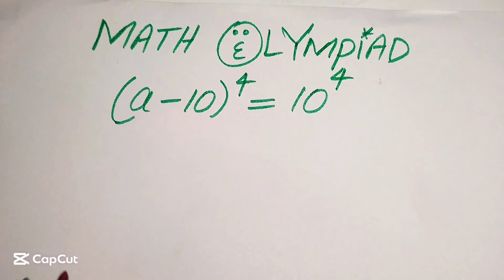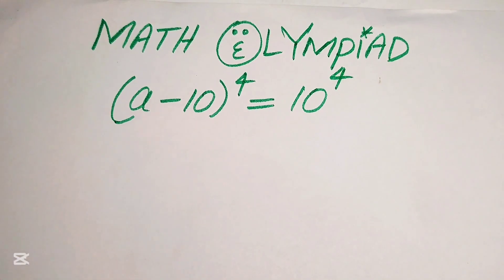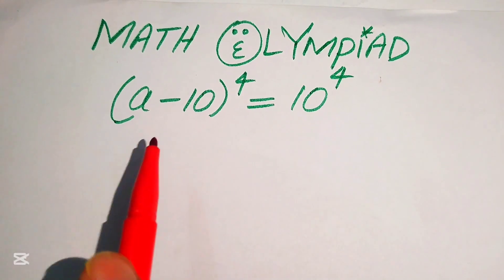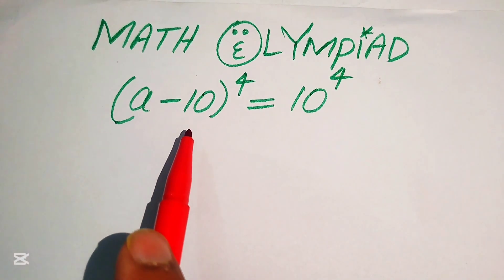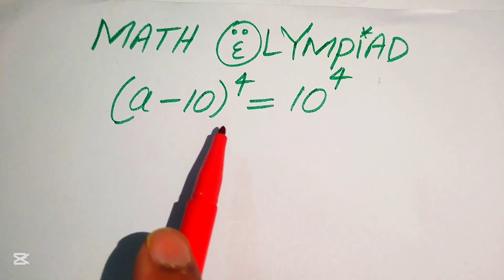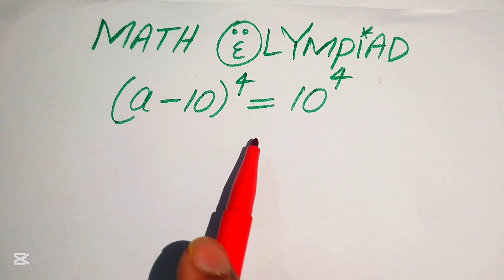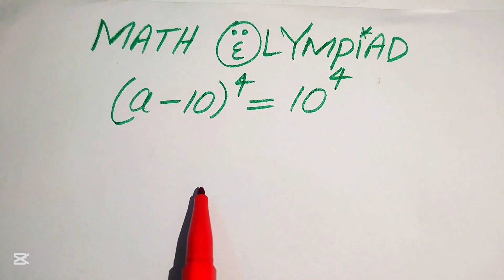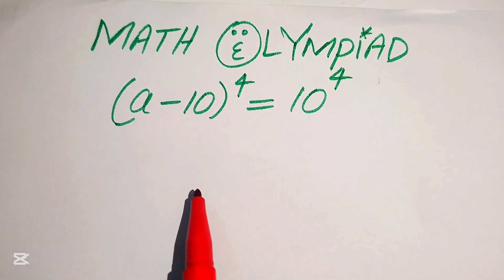Hello everyone, welcome to solve this nice math algebra problem. Here we have (a minus 10) to the power of 4 equals 10 to the power of 4, and we solve this problem for the values of a.